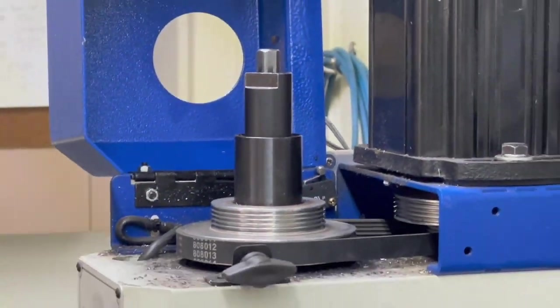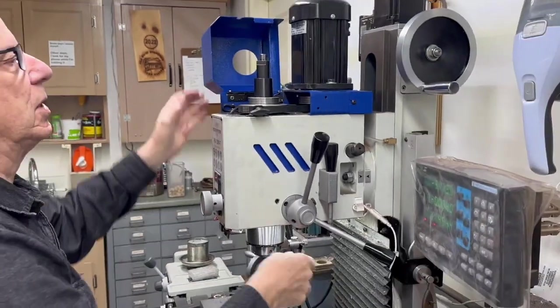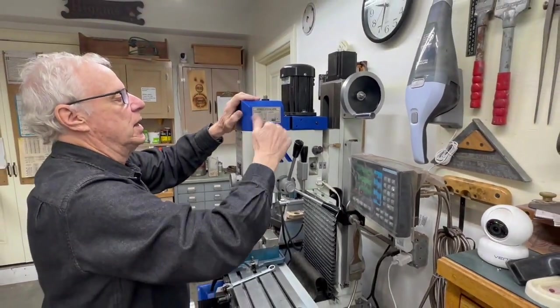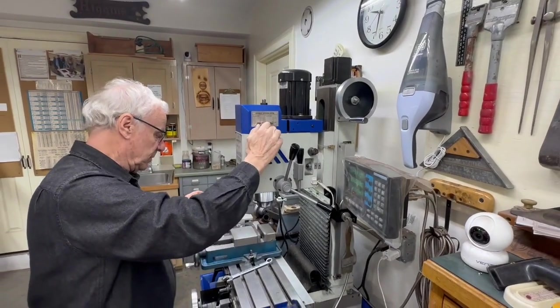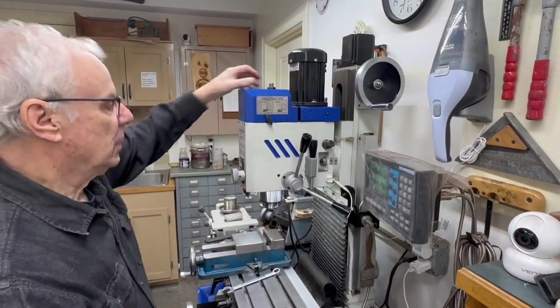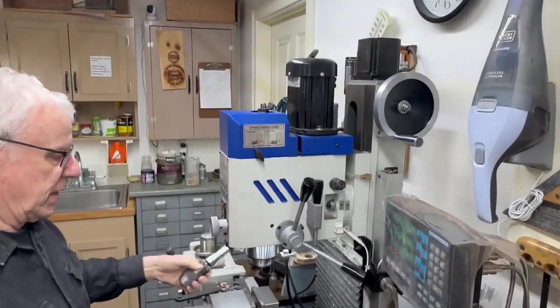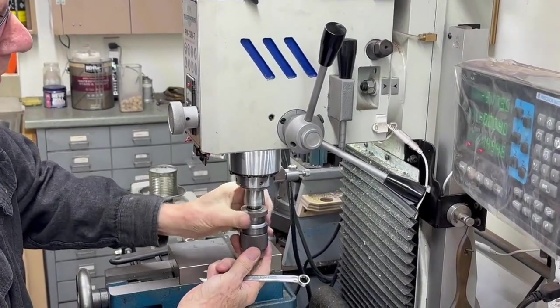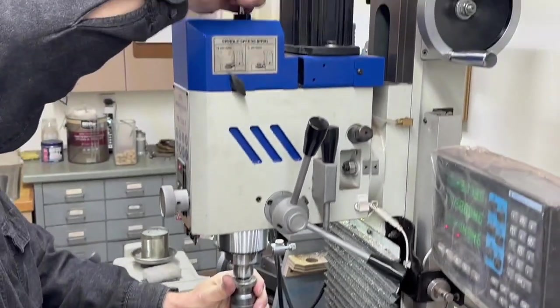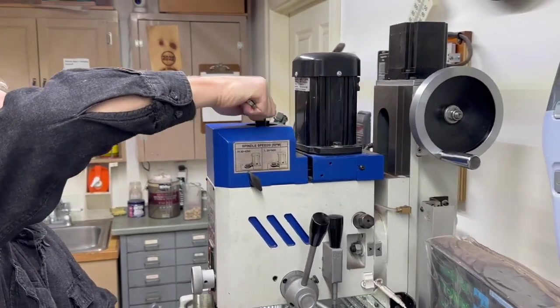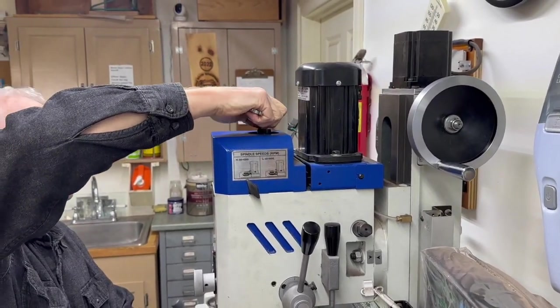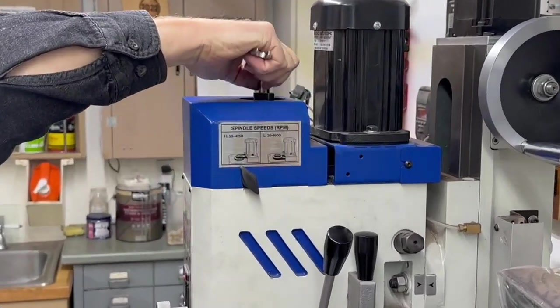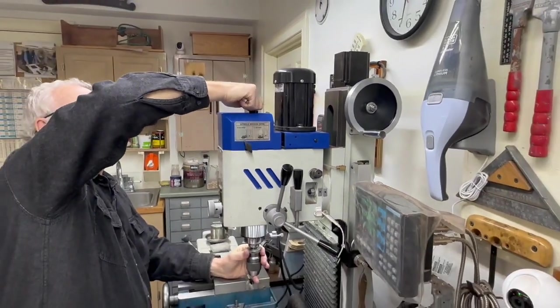And I have the spindle locked now with my fancy spindle lock, and now you'll see what difference that makes. So I'll put the chuck back in there. And this works the same, of course, with your collets also, but I'm using the chuck because it's easier to see.